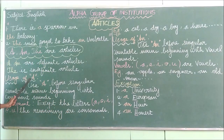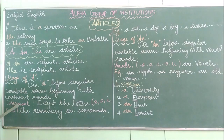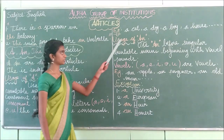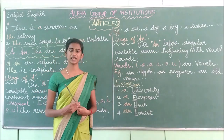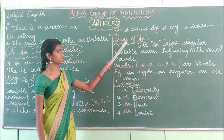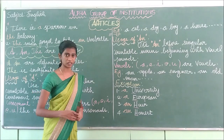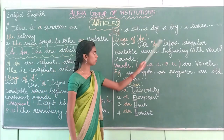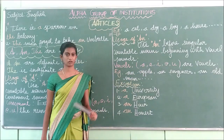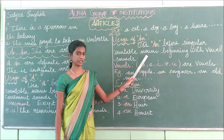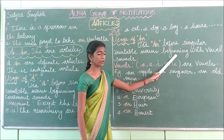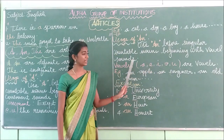Now let us see the usage of 'an'. Use 'an' before singular countable nouns beginning with a vowel sound. The same rule applies — it must be a singular countable noun — but in this case it should begin with a vowel sound. The vowels are A, E, I, O, U. So if the word starts with a vowel sound, you have to use 'an'.